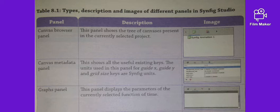First is the Canvas Browser Panel. This panel shows the tree of canvases present in the currently selected project, as you can see in the images.